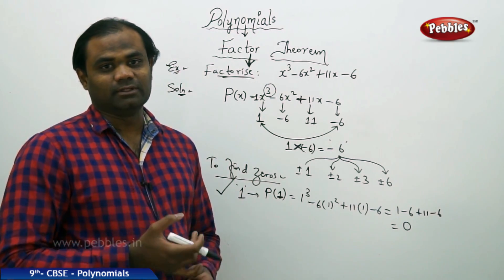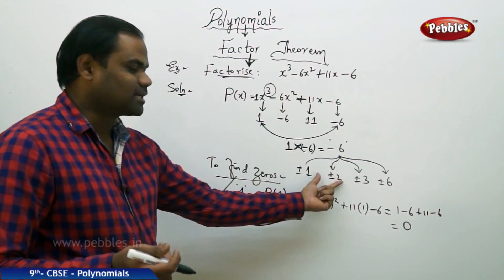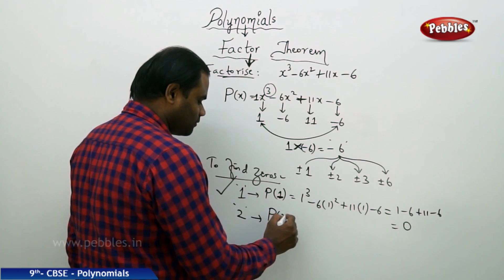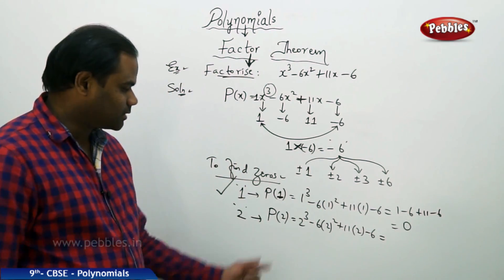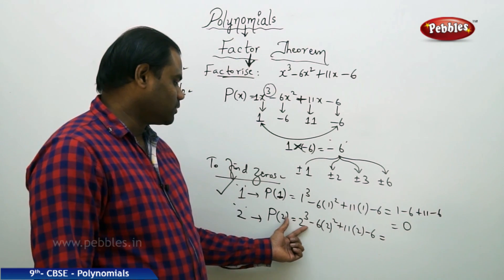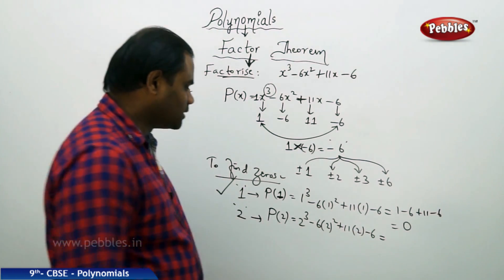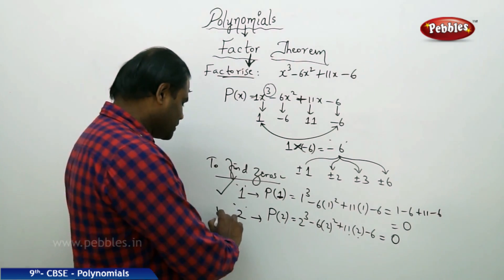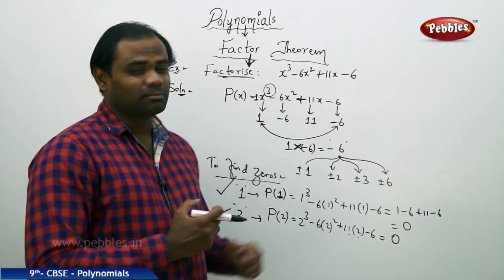Next, let's try plus 2. P of 2 is 2 cubed minus 6 times 2 squared plus 11 times 2 minus 6: 8 minus 24 plus 22 minus 6. This simplifies to 8 plus 22 minus 24 minus 6, giving 30 minus 30, which equals 0. Therefore x equals 2 is also a zero of the given polynomial P of x.